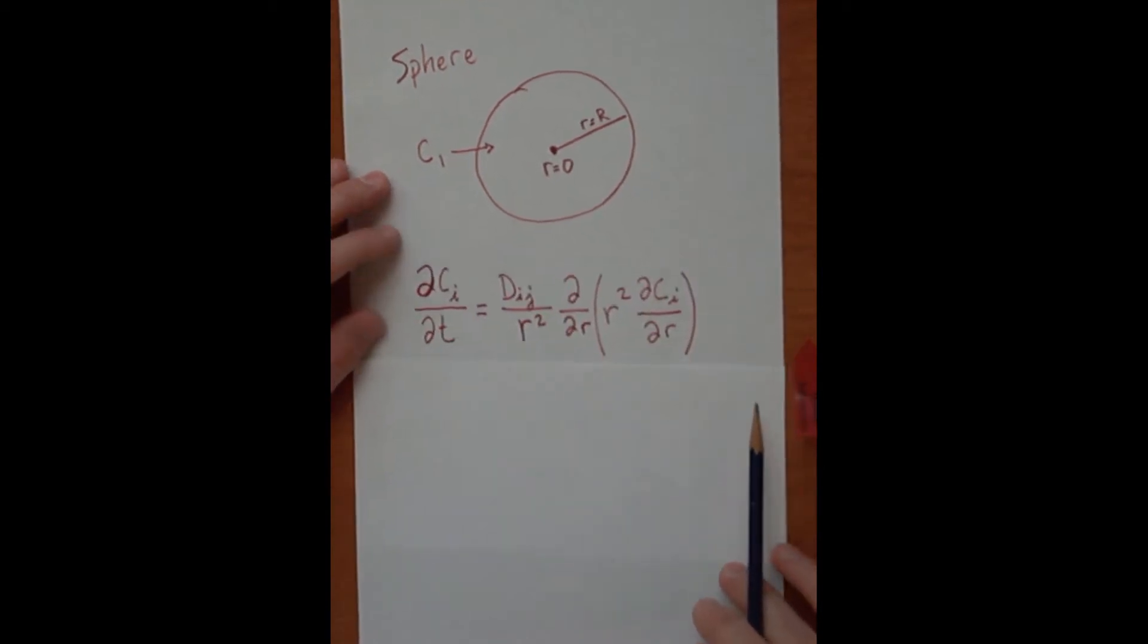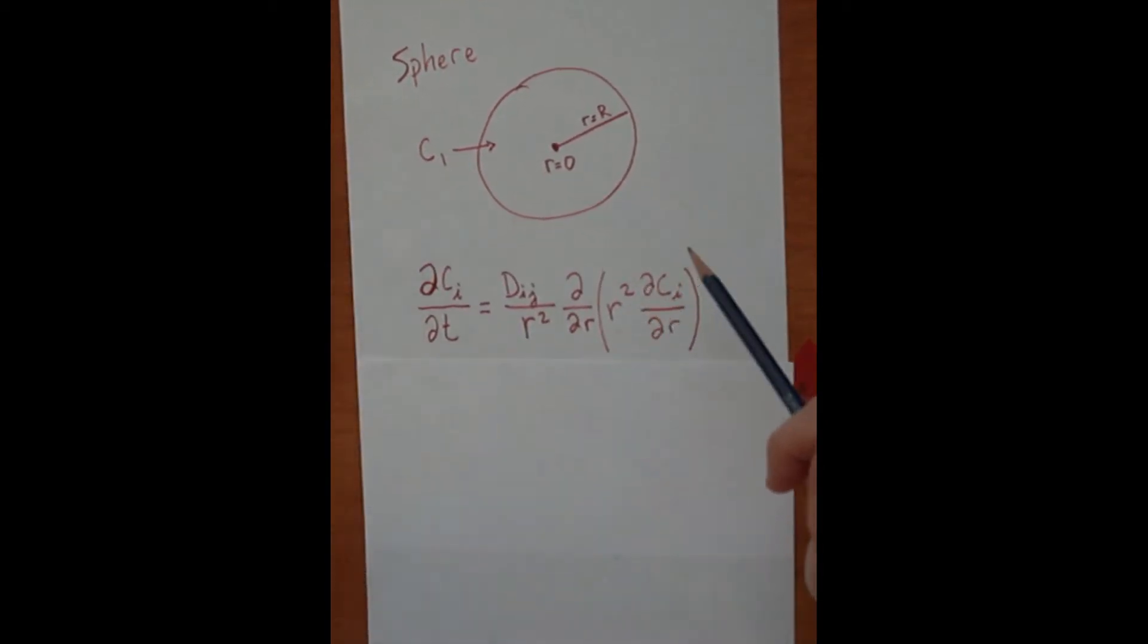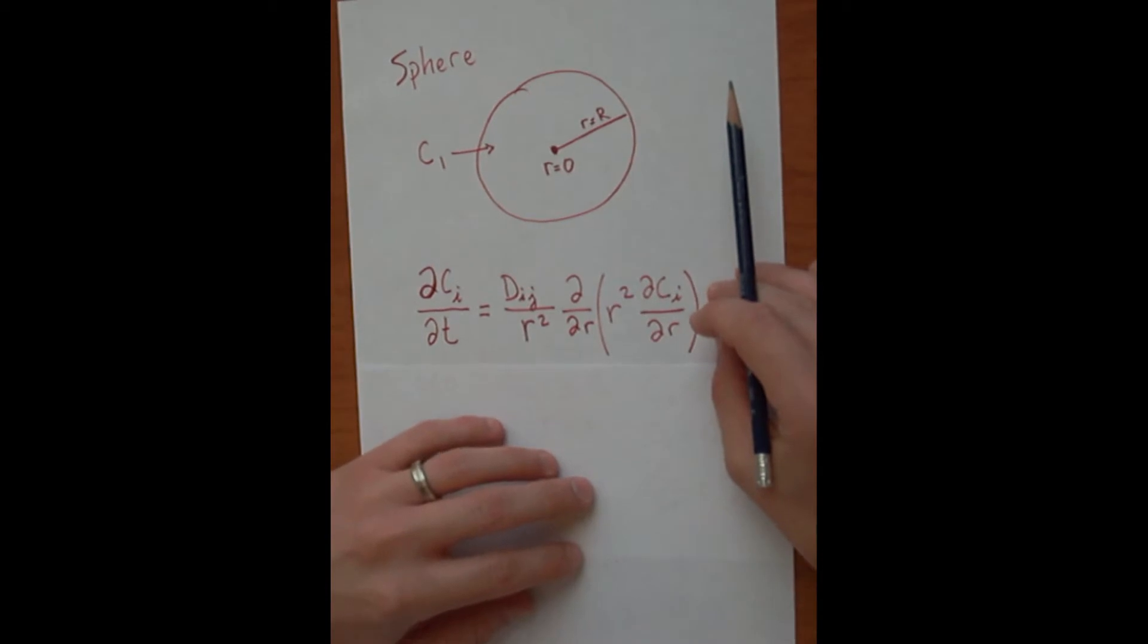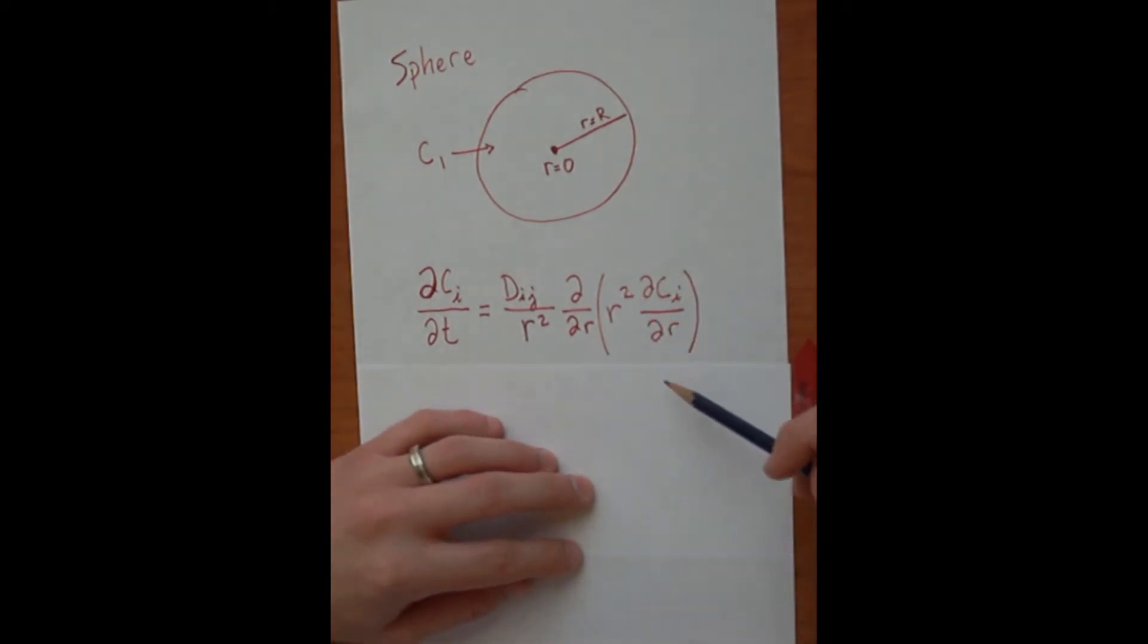So the governing equation for this geometry is given by Fick's second law, and you can see that Fick's second law is just going to be simple diffusion into the sphere, so a spherical coordinate system, and there's no reaction nor convection.